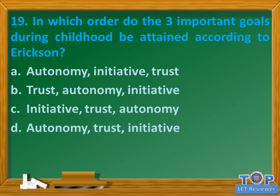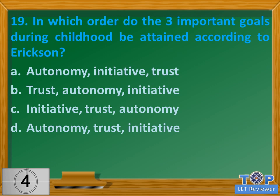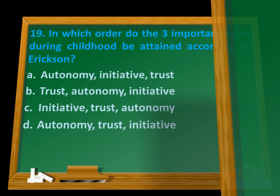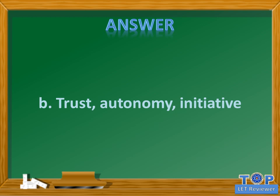Question number nineteen: in which order do the three important goals during childhood be attained according to Erikson? A) autonomy, initiative, trust; B) trust, autonomy, initiative; C) initiative, trust, autonomy; D) autonomy, trust, initiative. Answer: B) trust, autonomy, initiative.